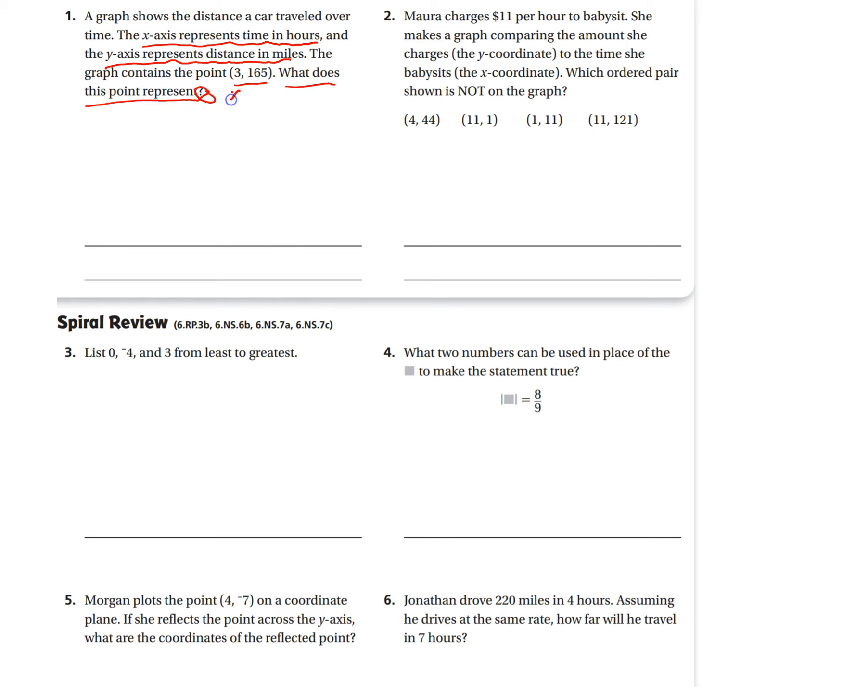Well, so what it's asking is, our first number is x, our second number is y. So what does that 3 represent? Well, this tells us in the problem, the x-axis represents time in hours. So the 3 means after 3 hours. And what are we talking about? How far a car traveled.